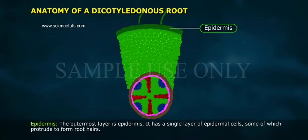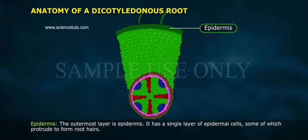Epidermis: The outermost layer is the epidermis. It has a single layer of epidermal cells, some of which protrude to form root hairs.